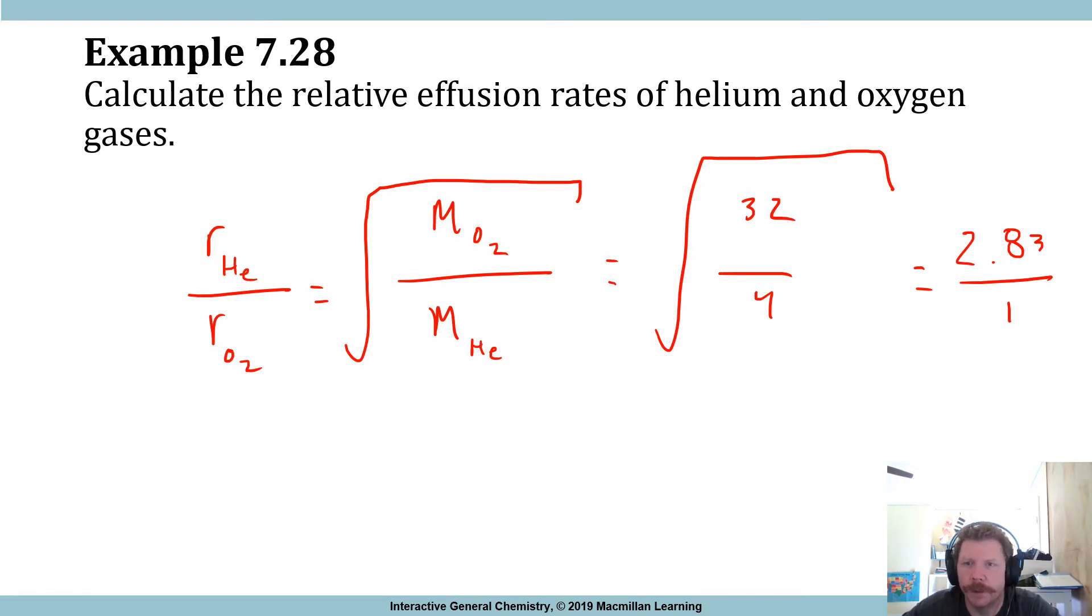So what that means is the relative effusion rates of helium and oxygen is 2.83 to 1. So helium atoms are going to effuse at a rate that is 2.83 times faster than the rate or the effusion rate of oxygen molecules. So think about that. Helium effuses faster than oxygen.